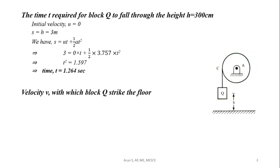Finally, the velocity V with which block Q strikes the floor. Starting from rest, initial velocity u equals zero, final velocity is v, distance is 3 meter. Using v squared minus u squared equals 2As, we get v squared equals 2 times 3.757 times 3, which gives v squared equals 22.54. Therefore, v equals 4.748 meter per second.